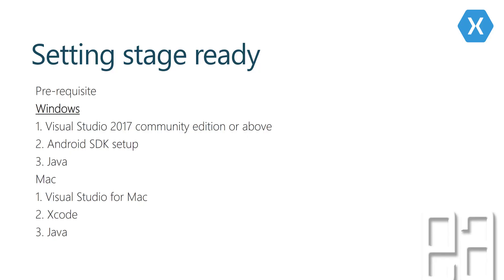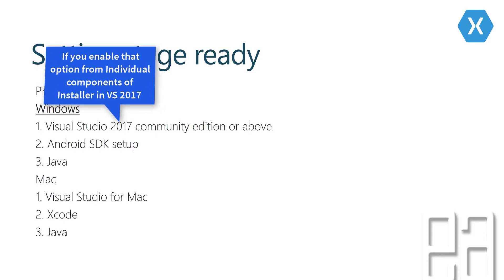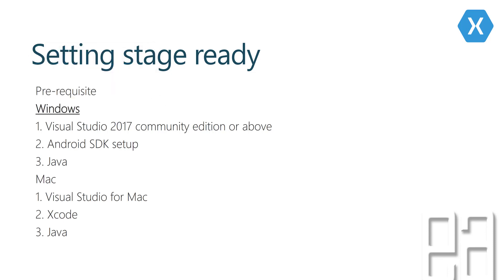Setting stage ready. The following prerequisite softwares are required for installing Xamarin in your machine. For Windows, we need Visual Studio 2017 Community Edition or above, Android SDK setup, as well as Java. If you install Visual Studio 2017 Community Edition, the Android SDK will automatically install for you, and this is not something you need to install separately. Java will also be installed alongside Visual Studio 2017.